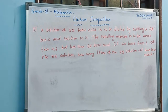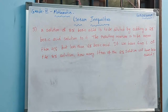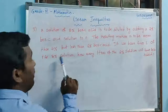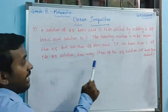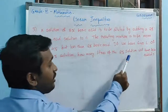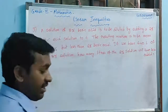A solution of 8% boric acid is to be diluted by adding a 2% boric acid solution to it. The resulting mixture is to be more than 4% but less than 6% boric acid. If we have 640 liters of the 8% solution, how many liters of the 2% solution will have to be added?